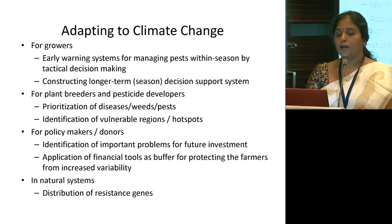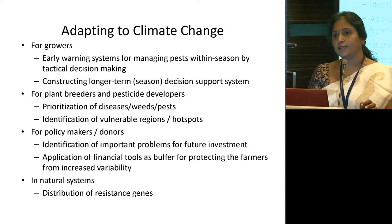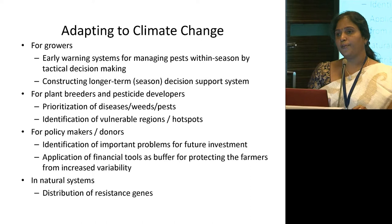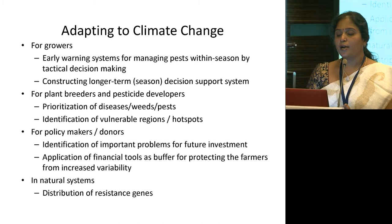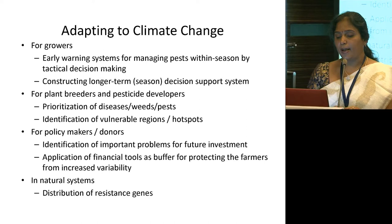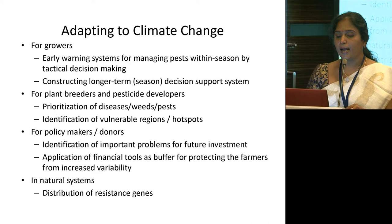How can we adapt to climate change? For growers: early warning systems for managing pests within the season through technical decision making; adjusting the sowing window earlier or later to create unfavorable conditions for pest species; and constructing longer-term decision support systems using climate and pathogen relationships for management decisions. For plant breeders and pesticide developers: prioritization of diseases, weeds or pests on a regional basis; identification of vulnerable regions and hot spots to develop appropriate management technologies. For policy makers and donors: identification of important problems for future investment on indirect impacts of climate change; application of financial tools as a buffer for protecting farmers from increased variability; and distribution of resistance genes in natural systems.